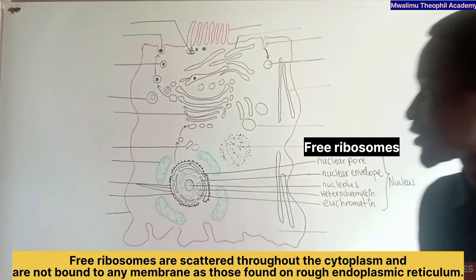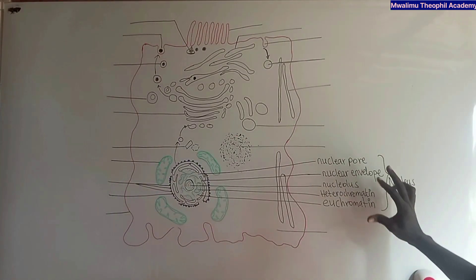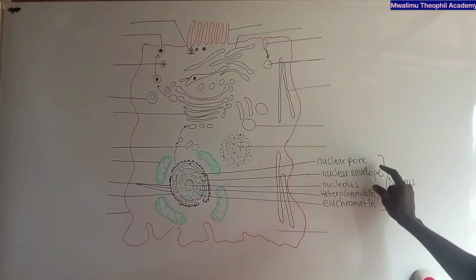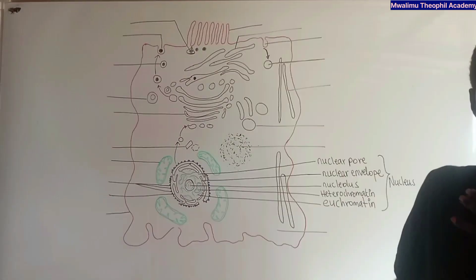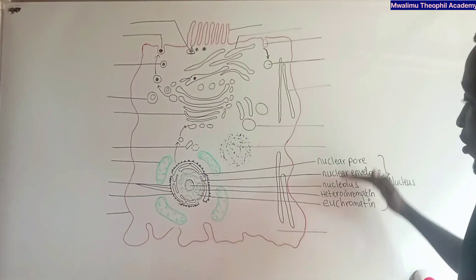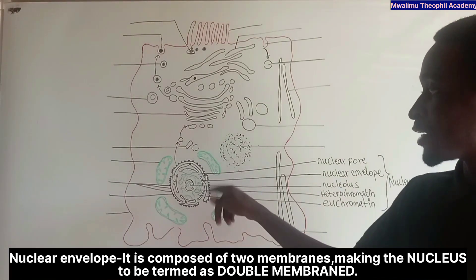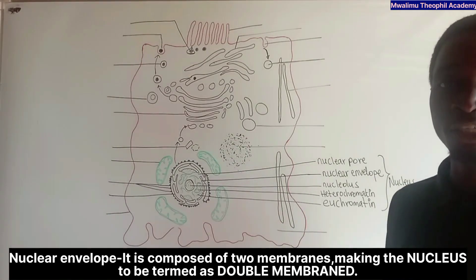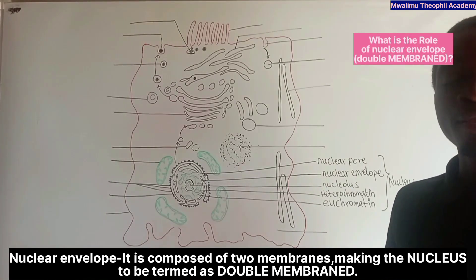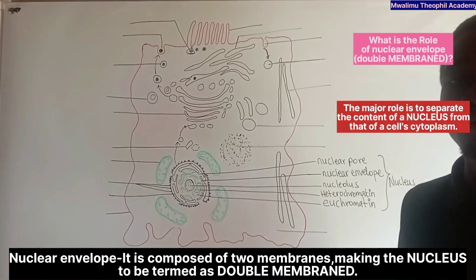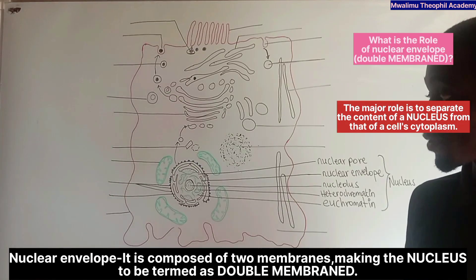The next part is the nucleus. The nucleus has the following parts: nuclear pore, nuclear envelope, nucleolus, heterochromatin, and euchromatin. The nuclear envelope is a double membrane, meaning it has two membranes. Its role is to separate the content of the nucleus from the content of the cytoplasm of the cell.